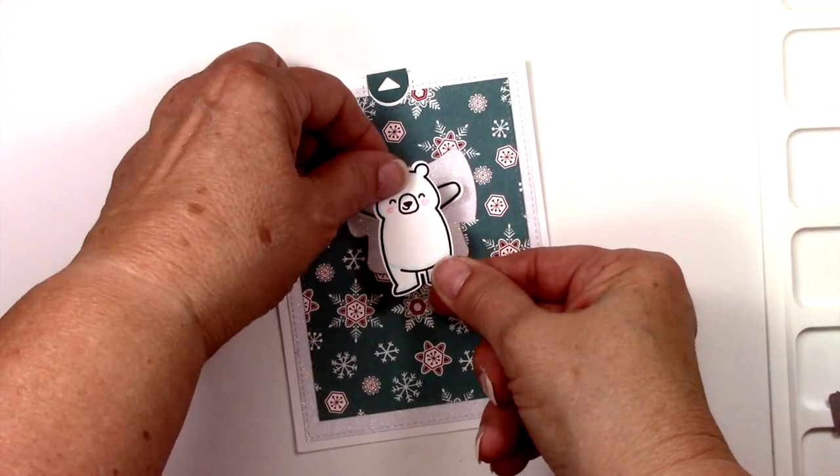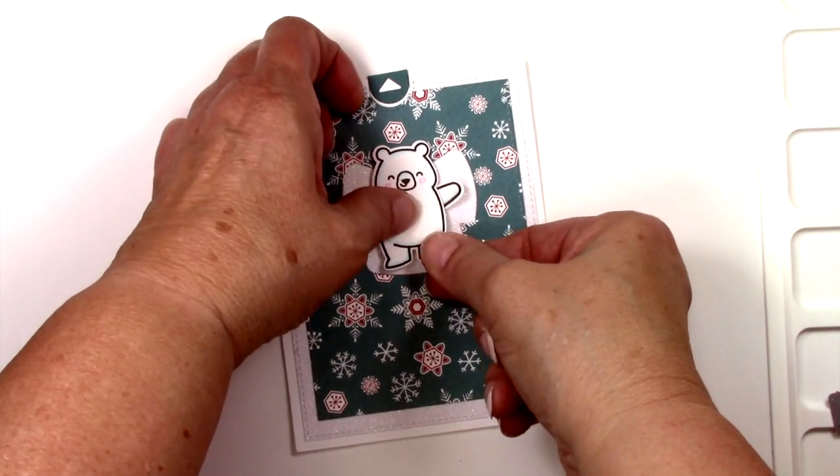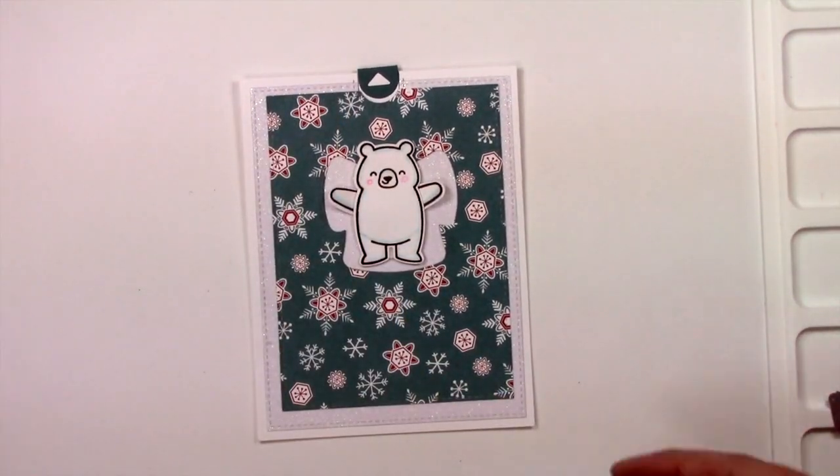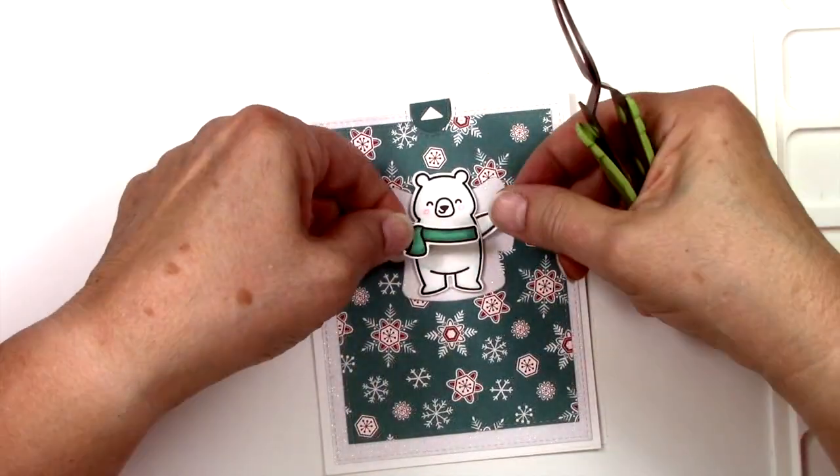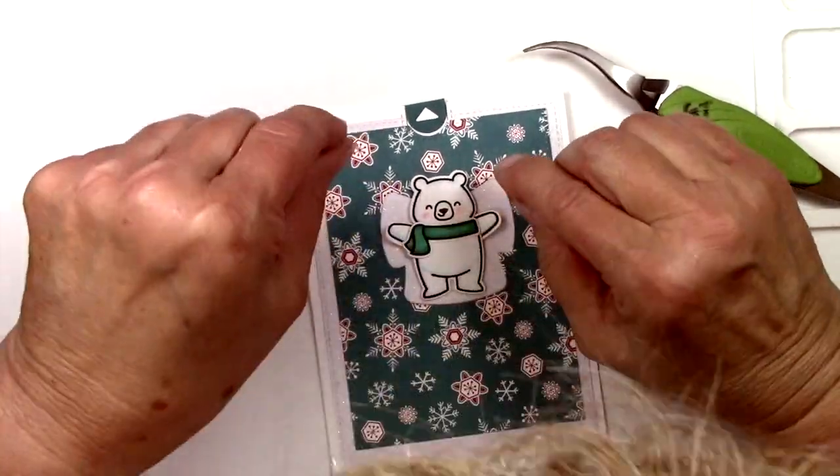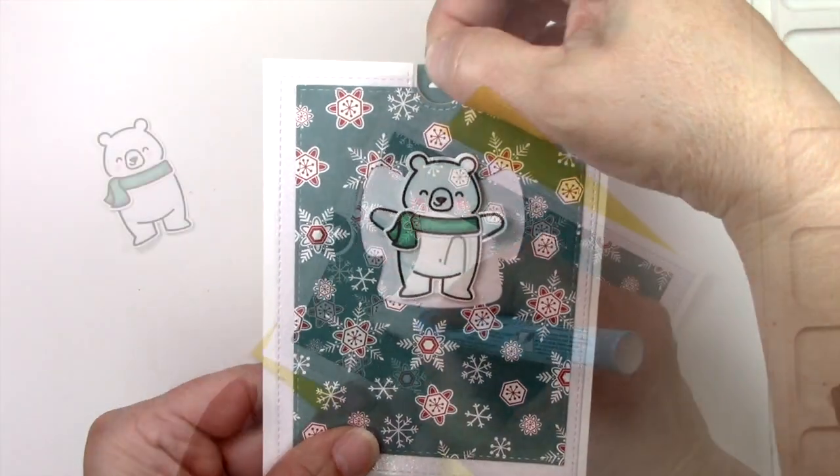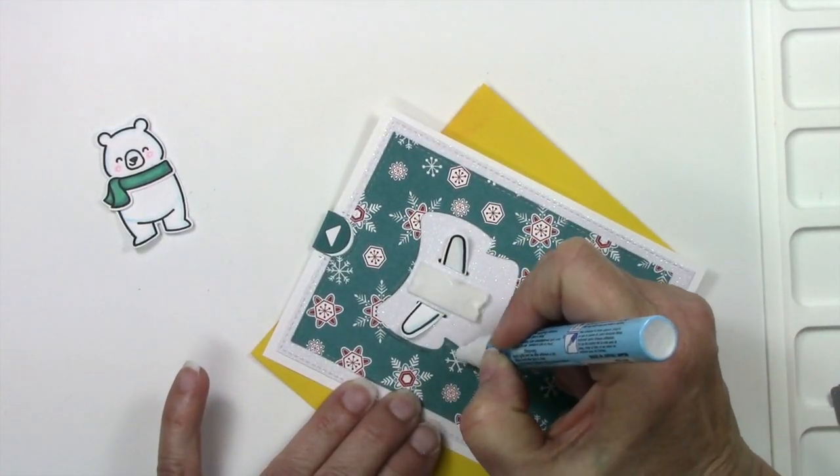I'm just going to adhere the bear on with a little bit of foam tape. What a cute little bear. I hope you will consider subscribing too. I would love to have you go through my playlist. There are just dozens and dozens of different techniques there. Now I'm putting on his little scarf. Very easy coloring, that's why I don't do it in front of you. I'm not the best at that, so I wouldn't waste your time.